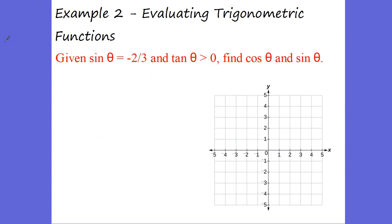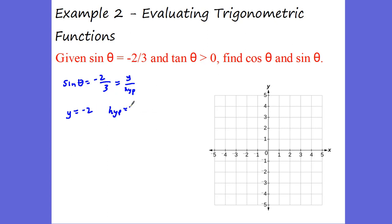Now let's take a look at this. It says given sine of my angle equals negative 2 over 3. Think about what sine is — sine is the y over the hypotenuse. The hypotenuse can never be negative; it's a scalar quantity. So I know my y value is negative 2 and my hypotenuse is 3. I can do the Pythagorean theorem: x squared plus negative 2 squared equals 3 squared, so x squared plus 4 equals 9, and x squared equals 5, which means x equals the square root of 5.